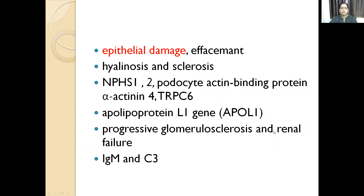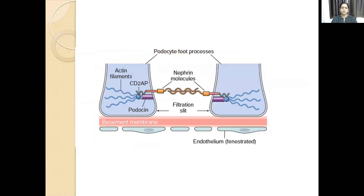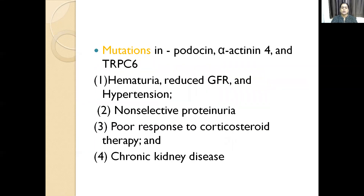Progressive glomerulosclerosis and renal failure may result. IgM and C3 are the ones which get deposited. The clinical features are: hematuria, reduced GFR and hypertension, non-selective proteinuria, poor response to corticosteroid therapy, and progression to chronic kidney disease.